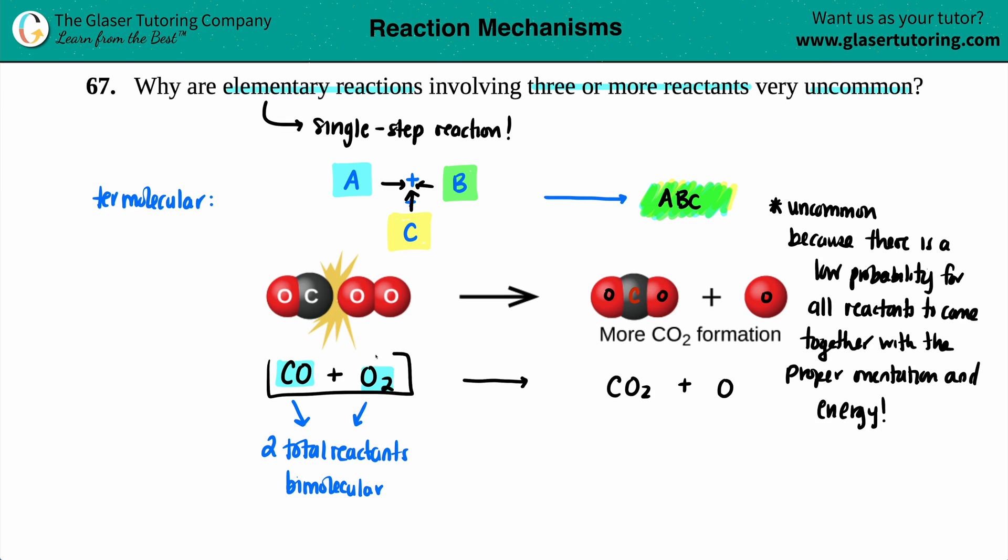But if you dial it down a notch and you have two reactants coming together, it's a higher probability that they're going to be in the orientation they need and they have the proper amount of energy. And with a unimolecular, when you only have one reactant, that's the highest probability because you only got one reactant.